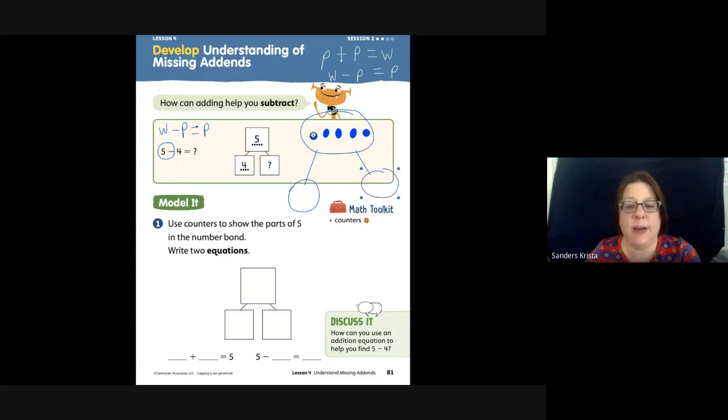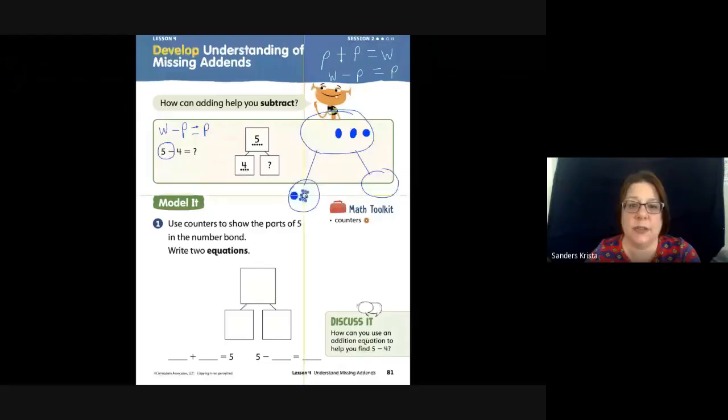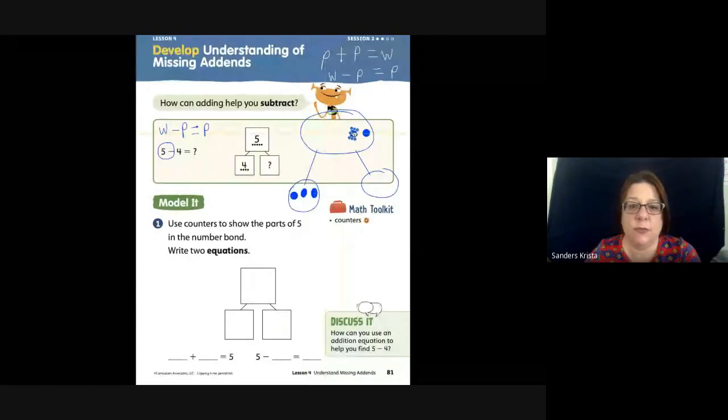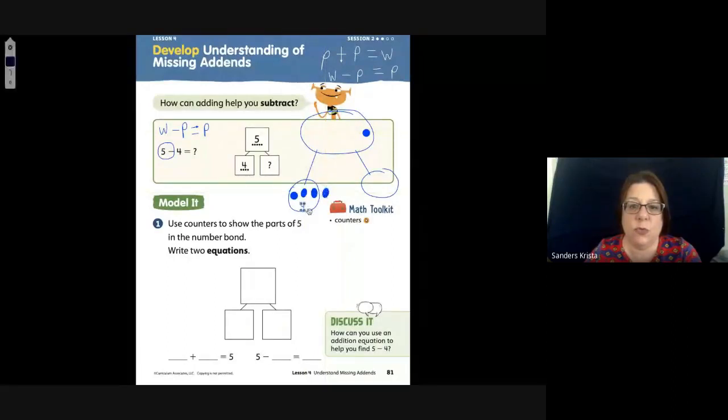So if I have five as my whole and four is my part, I can actually manipulate the blocks to move around like this. Three, four. So four was my part, right? So what is my missing part? Whatever is left over, which is one.